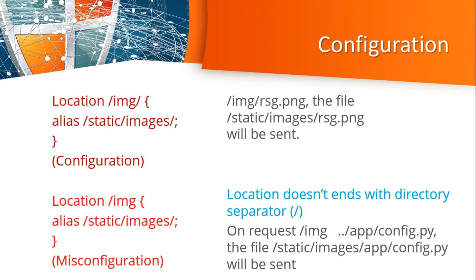Now what is the misconfiguration here? The location block doesn't end with a directory separator. As you can see in the misconfiguration, /img doesn't end with a slash, whereas in the correct configuration it does end with a slash. So if you request ../app/config.py, the file static/images/../app/config.py — effectively static/app/config.py — will be loaded. In the demo you will see how it works.